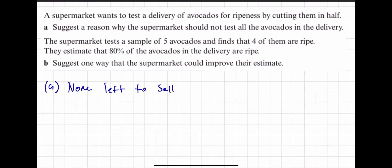So I'm going to write none left to sell. Why are you going to take a census of products if it involves destroying the product? That doesn't make any sense. And then the supermarket tests a sample of five avocados and finds that four of them are ripe. They estimate that 80% of the avocados in the delivery are ripe. Suggest one way that the supermarket could improve their estimate. Well, testing five avocados, if it's a big supermarket obviously they're going to have loads of avocados. Testing five is not going to be enough. You could say use a larger sample size. Now obviously if you use a larger sample size, you're more likely to get a more accurate result.